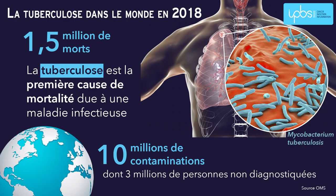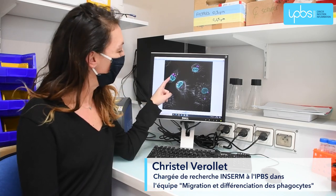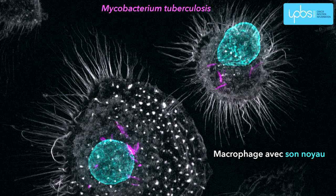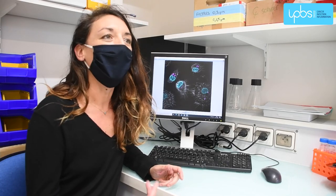Responsable de 1,5 million de morts par an, la tuberculose est encore aujourd'hui la maladie infectieuse la plus meurtrière. Les macrophages que vous pouvez voir ici sont la principale cible de la bactérie de la tuberculose, et on sait depuis très longtemps que la bactérie est capable de reprogrammer le macrophage.